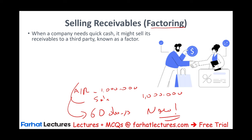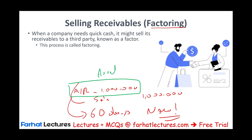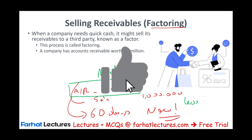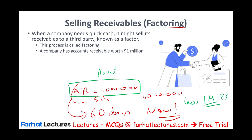We go to a finance company, a bank, a financier, and we tell them we will sell them this receivable. We are selling this asset because we need the money now. So if the receivable is worth a million, we're going to sell it - but we're going to sell it for less than one million. Why would we sell it for less? Because the other party, as long as they are rational, will not pay us a million dollars or more.